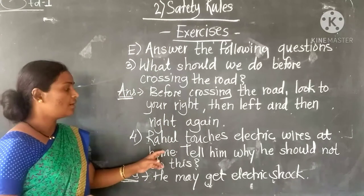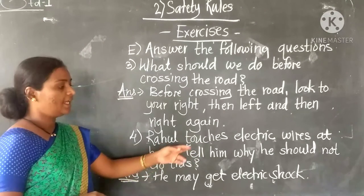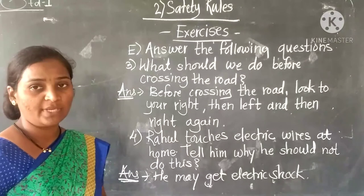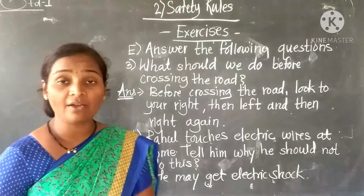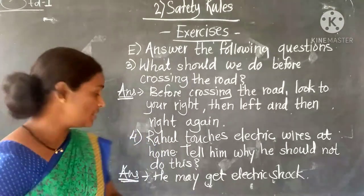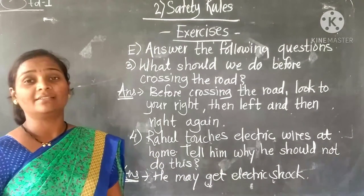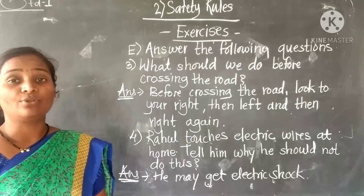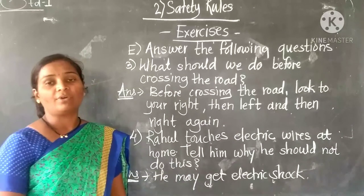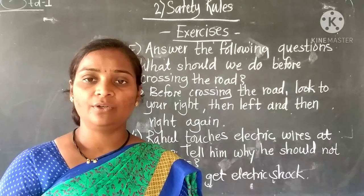Question four: Rahul touches electric wires at home — tell him why he should not do this. This is a value-based question. He should not touch the electric wire because he may get an electric shock. In this way, complete your exercise in your notebook.